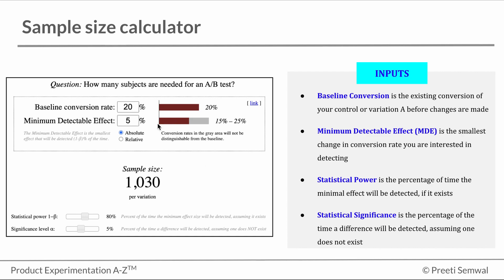So let's assume our baseline rate is 20% and our MDE is 5%. You can choose absolute or relative. We are choosing absolute minimum detectable effect of 5% here. We are looking for a statistical power of 80% and let's say the significance level that we are looking for is 5%.